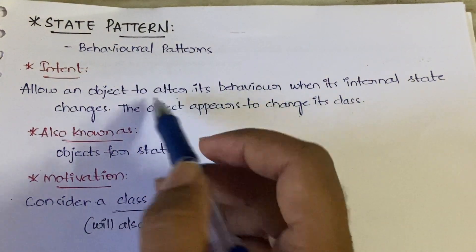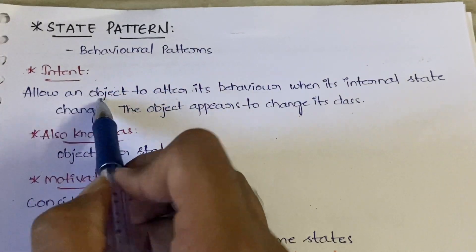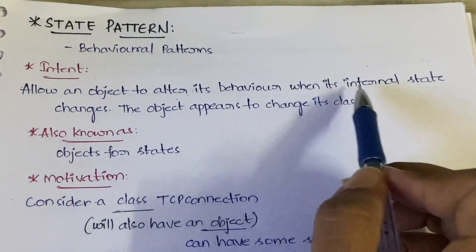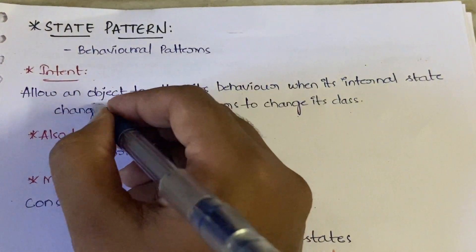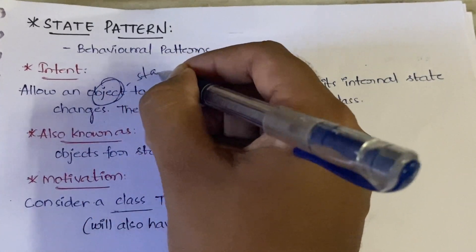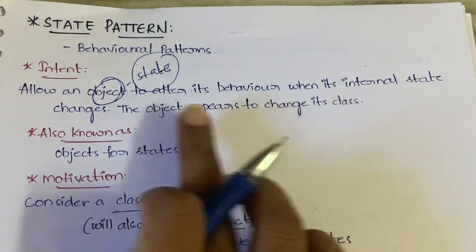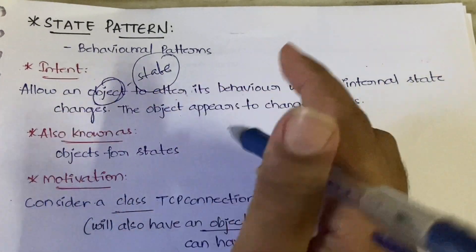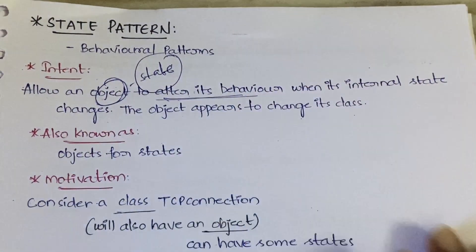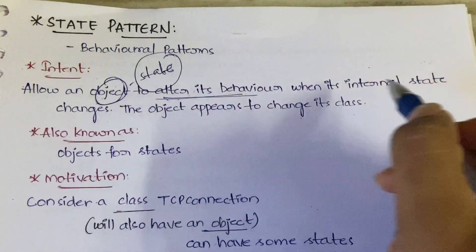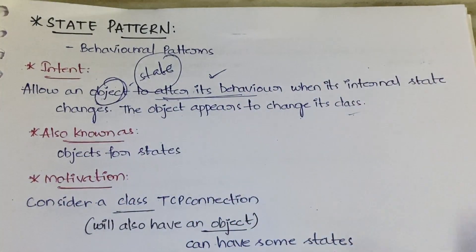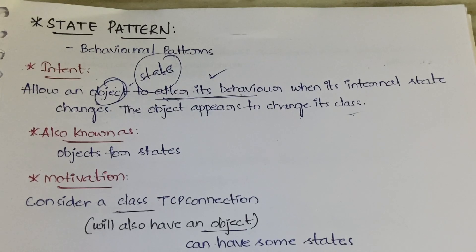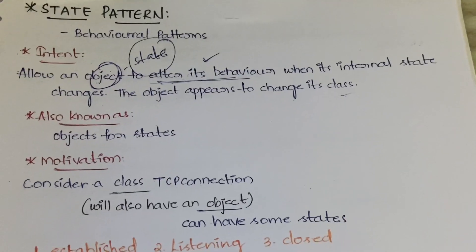The State Pattern is a behavioral pattern. Its intent is: it allows an object to alter its behavior when its internal state changes. So when the internal state of an object changes, the object changes its behavior. The object also appears to change its class. This pattern is also known as 'Objects for States.'